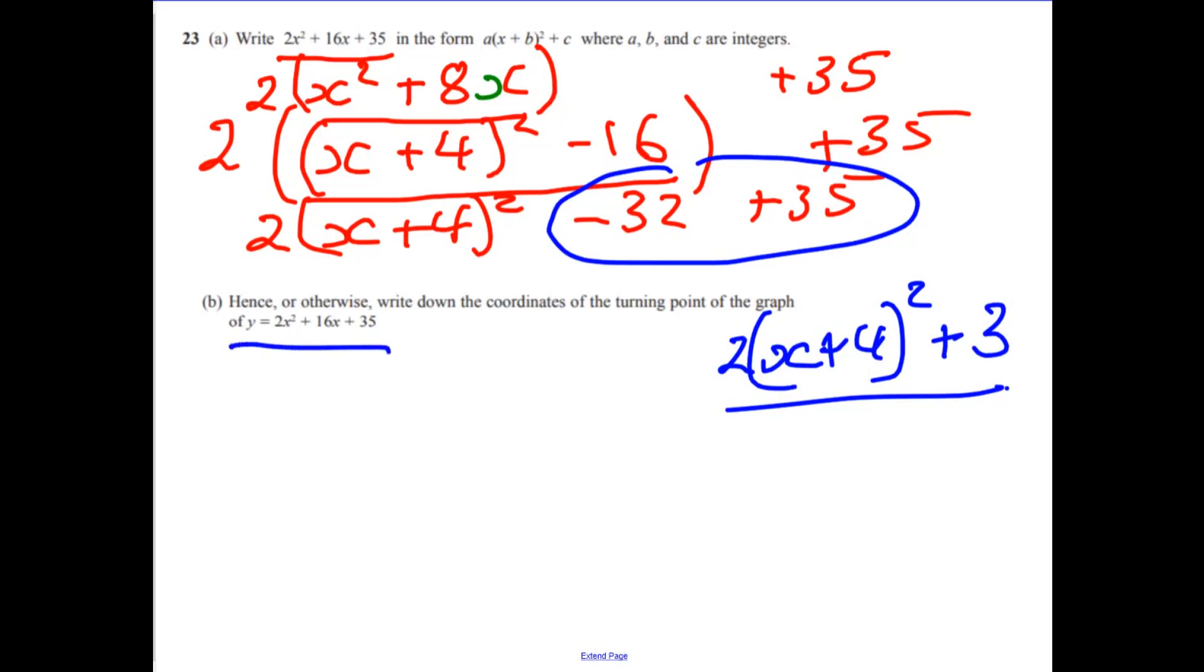Now, on part b, it says write down the coordinates of the turning point. Now, the turning point is when this bit in here is going to be 0, and on this one, that's actually going to give us where our, if you think about drawing this, it's going to be a nice, happy graph. So when this bit in here is going to be 0, it's going to identify the lowest point on the graph, in other words, the minimum point on the graph. So when is that equal to 0?